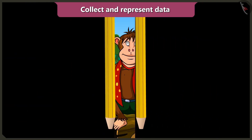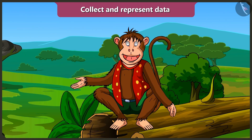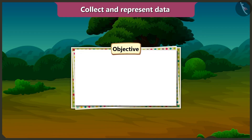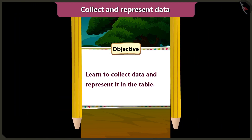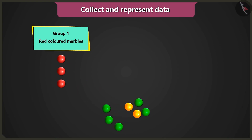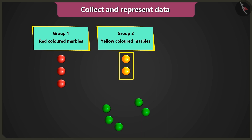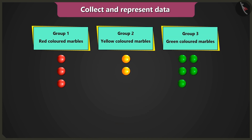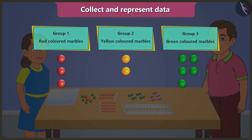Teach me. Today, in this video, we will learn about collecting data and representing it in a table. Bubbly, first of all, you have to make a group of same colored marbles. First group of red colored marbles, second group of yellow colored marbles, and third group of green colored marbles.